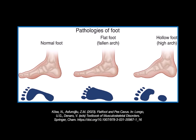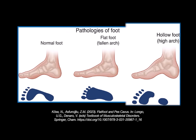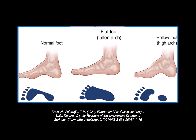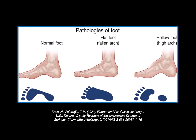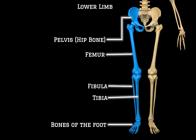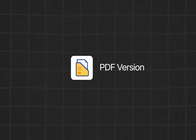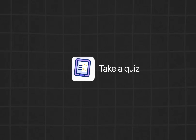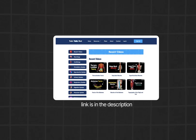Each of these arch defects alters weight distribution across the sole, which you can see in a foot imprint — with a high arch, only the heel and toes make contact, while with flatfoot the whole sole makes contact. These changes don't just affect the foot; they can throw off the biomechanics of the entire lower limb, from the ankle to the knee to even the hip. So that was everything on the joints and arches of the foot, completing the entire skeletal anatomy series of the lower limb. For a PDF version of this lecture, a quiz, or an organized list of all videos, you can find everything on the website.